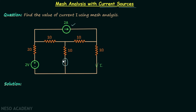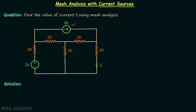In case number two, the current source is shared by two meshes — for example, this current source shared by this mesh and this mesh. This particular case is known as super mesh analysis. In this lecture we are going to discuss only case number one, and in the next lecture we will discuss super mesh analysis.